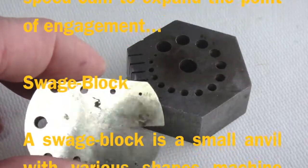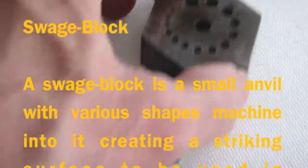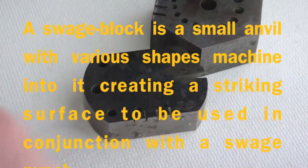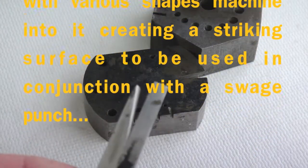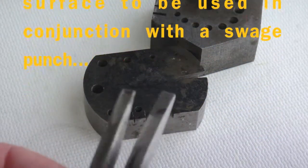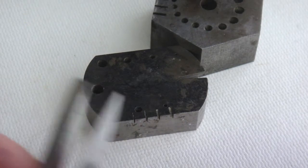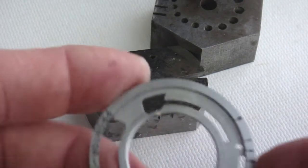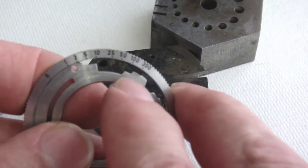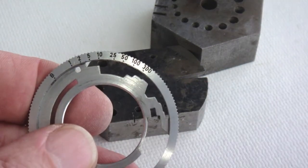A swage block is a small anvil with various shapes machined into it, creating a striking surface to be used in conjunction with a swage punch that is struck with a hammer to create the groove in the shutter speed cam, as you see here along this cam line.